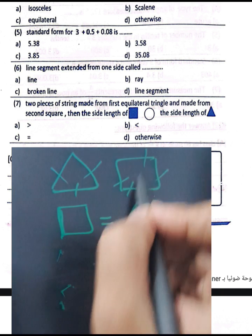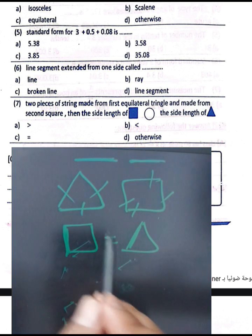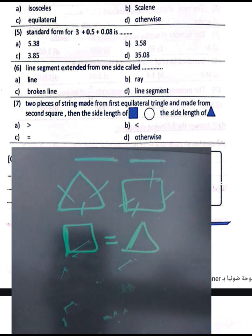The side lengths of the square and the triangle will be equivalent because two pieces of string made from the first equilateral triangle and the second square have equal perimeters. Since the perimeters are equal, the two shapes are congruent, and the perimeter of the first equals the perimeter of the second, so the side lengths of the first are equivalent to the side lengths of the second.